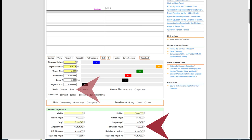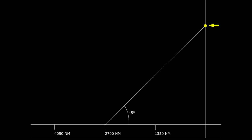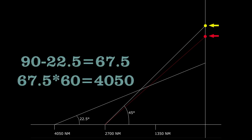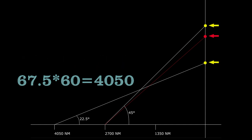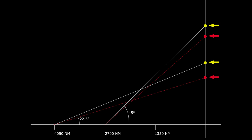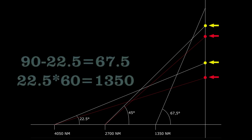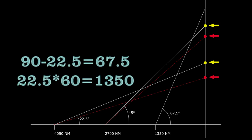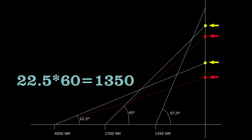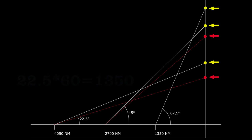So the observed star would appear here, but the real position of the star would be here. At 4,050 nautical miles — which should require an elevation angle of 22.5 degrees — the observed star will be here, but the real star would be 5.7 degrees lower. At 1,350 nautical miles, at an elevation angle of 67.5 degrees, the observed star would be here, but the star would in reality be 1.9 degrees lower.